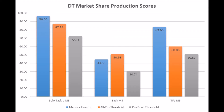When you look at him, he actually did very well. He had a 96.60 solo tackle production score, a 44.55 sack market share score, and an 83.66 tackle for loss market share production score. As you can clearly see, in terms of solo tackle data and tackle for loss data, he hits every single threshold indicative of a multiple all-pro player, but does not hit the multiple all-pro threshold when it comes to sack market share.